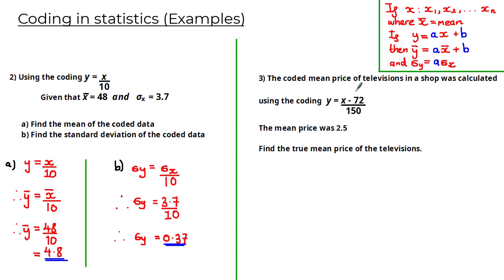Next question. The coded mean price of televisions in a shop was calculated using the coding y = (x − 72) / 150. The mean price was 2.5. Find the true mean price of the televisions. I'll give you a few minutes to pause the video and have a try at this question.